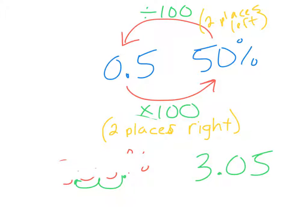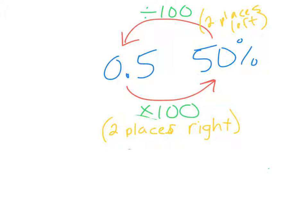So that's how you convert a decimal to a percent and a percent to a decimal. Decimal to a percent is two places to the right. Percent to a decimal is two places to the left. We'll see how that looks as we go through the next chapter.